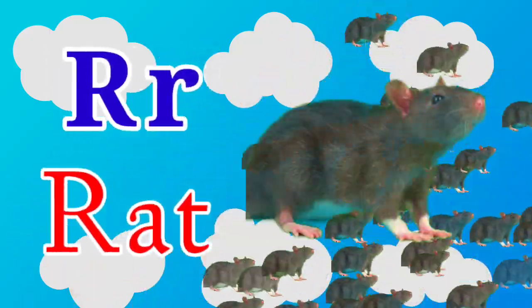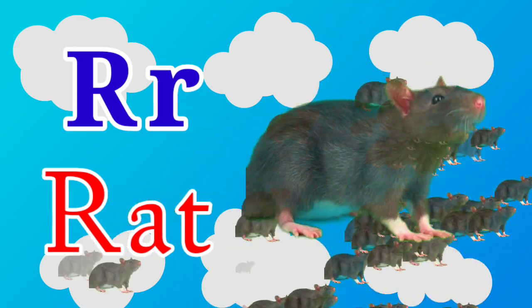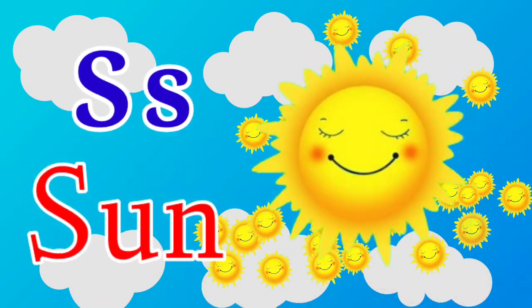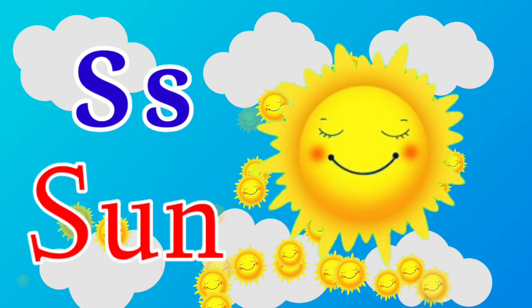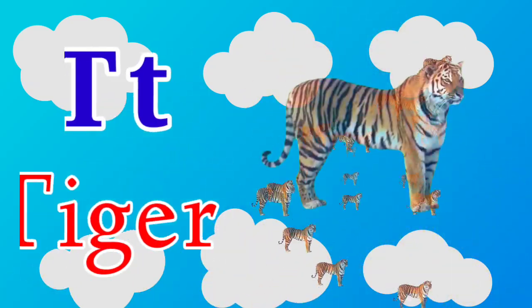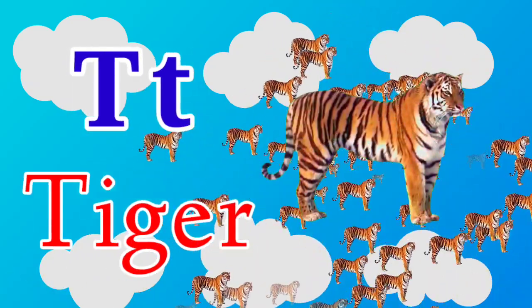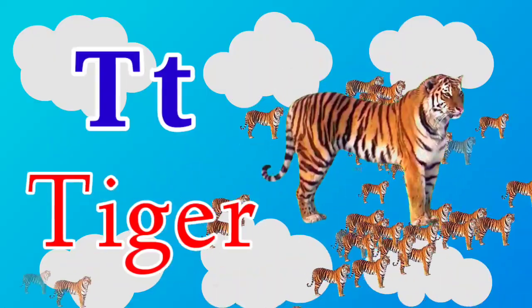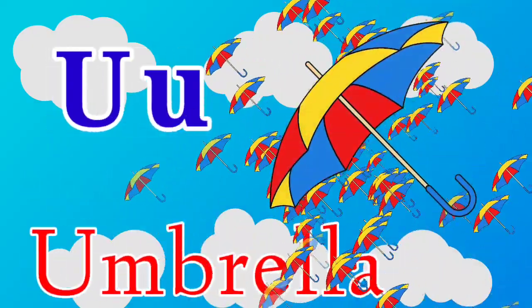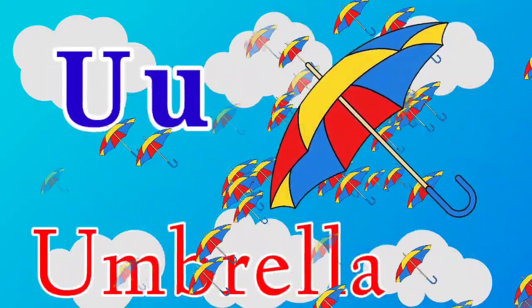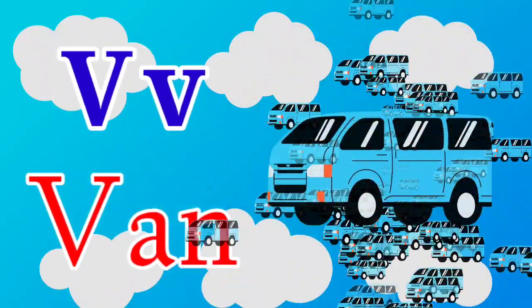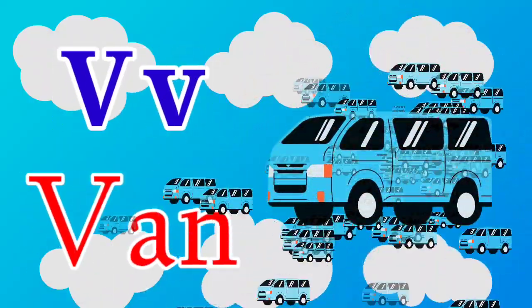R for Rat, S for Sun, T for Tiger, U for Umbrella, B for Ban.